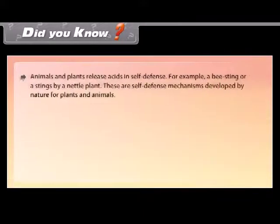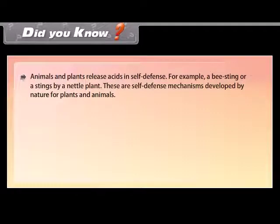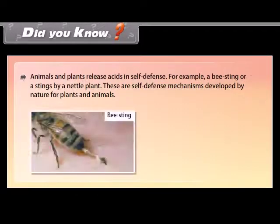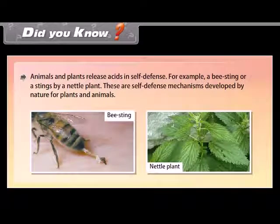Did you know? Animals and plants release acids in self-defense. For example, a bee sting or stings by a nettle plant are self-defense mechanisms developed by nature for plants and animals.